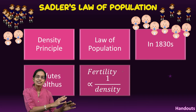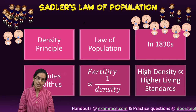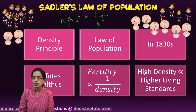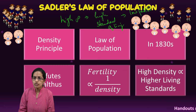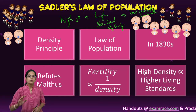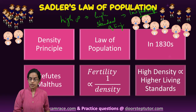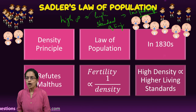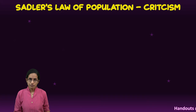This theory basically said that fertility goes inverse with density — higher the density, lesser is the fertility. More population would lead to higher standards of living, and higher standards of living would ultimately be responsible for low fertility. Because of higher standards of living, you would have an economic aspect and a component of happiness attached to it, resulting in lower fertility in areas with higher standards of living.